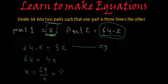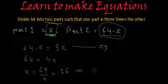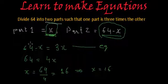And from here we will get x is equal to 64 by 4. This will be 4 into 4 is 16. So we got x is equal to 16.